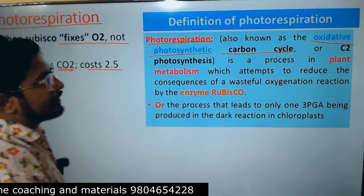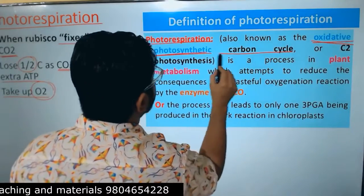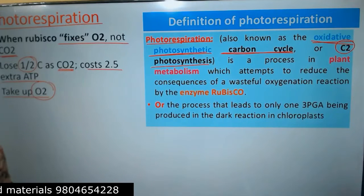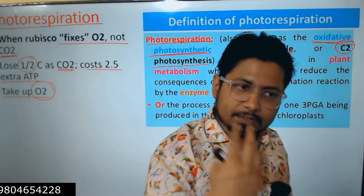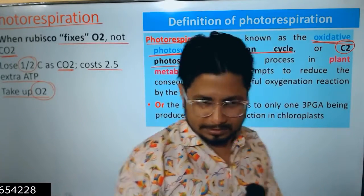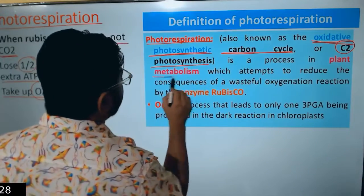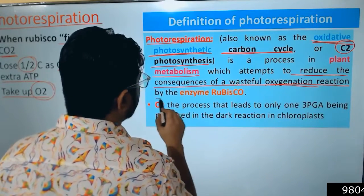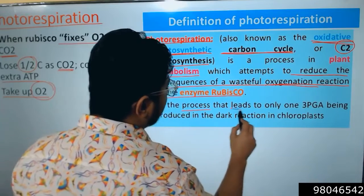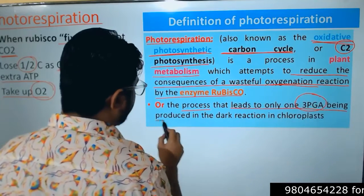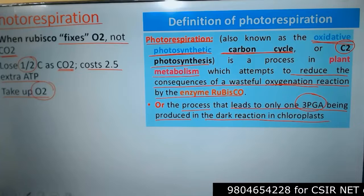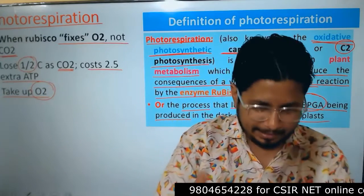Photorespiration is also called C2 photosynthesis because the stable intermediate produced is glycolate, a 2-carbon molecule. In contrast, normal carbon fixation produces 3-phosphoglycerate, a 3-carbon molecule — called C3 photosynthesis. Photorespiration is the plant metabolism that attempts to reduce the consequence of wasteful oxygenation by Rubisco, producing only one 3-phosphoglycerate in the dark reaction of the chloroplast.